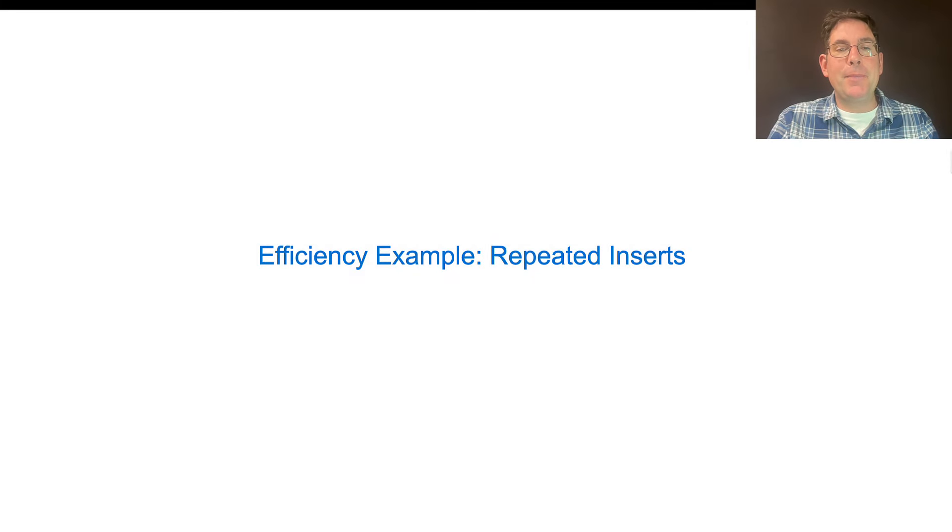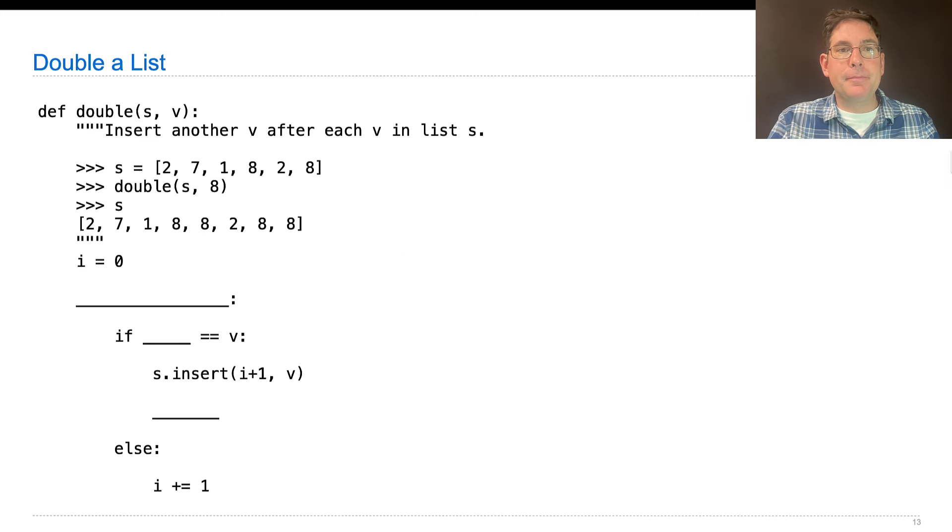Let's look at an example that involves a lot of inserting, and we'll try it on both a list and a linked list. The example is that you go through a list and mutate it, inserting another v after each v for some value v in some list s.